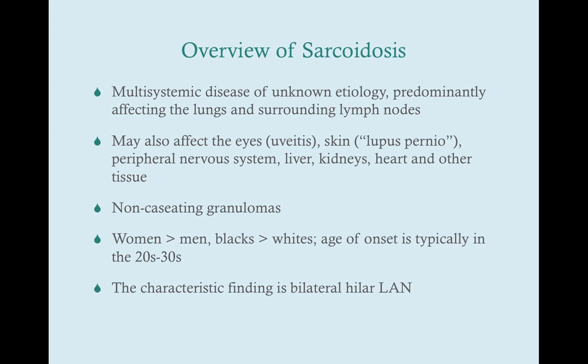Sarcoidosis is a multi-systemic disease and we don't know what causes it. When you see this on the USMLE and in clinical practice, primarily you're going to see symptoms affecting the lungs, constitutional symptoms, and symptoms that affect the skin. It can also affect the eyes, the peripheral nervous system, liver, kidneys, heart, and other tissues. So really sarcoidosis can affect anything.